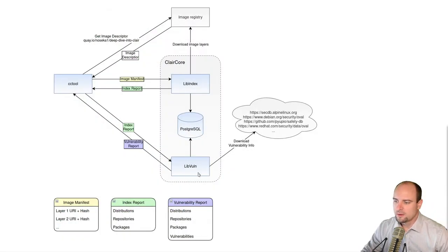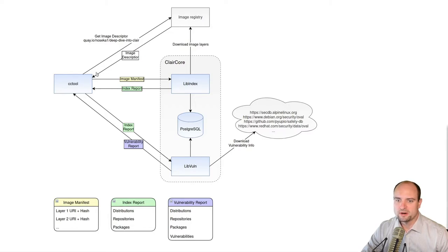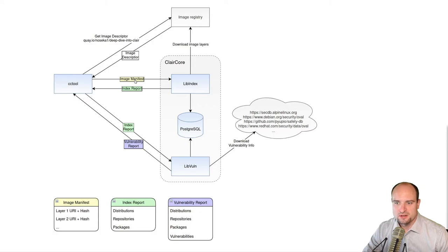After libvulnerability has downloaded and parsed all the vulnerability information from various databases and stored it in the Postgres database, we can use the cctool to submit a container image for scanning. ClairCore tool takes as a parameter the location of the image in the registry — in our case, we are going to scan an image stored in Quay.io in a repository called 'deep dive into Clair'. The ClairCore tool contacts the image registry, downloads an image descriptor containing metadata about the image and its individual layers, and creates an image manifest — a JSON file containing just the layer information and where they can be downloaded from.